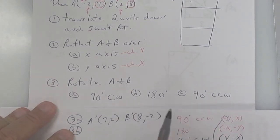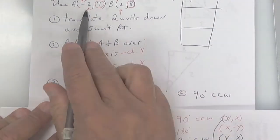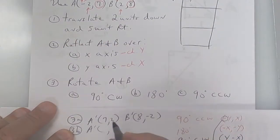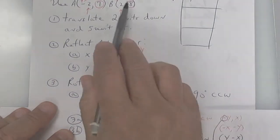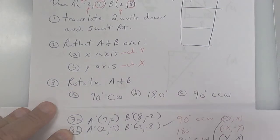For 3b, 180 degrees — you don't switch them but you change both. So A prime: change and change, giving 2 and negative 7. B prime: change and change, giving negative 2 and negative 8. That's 180 degrees in either direction.